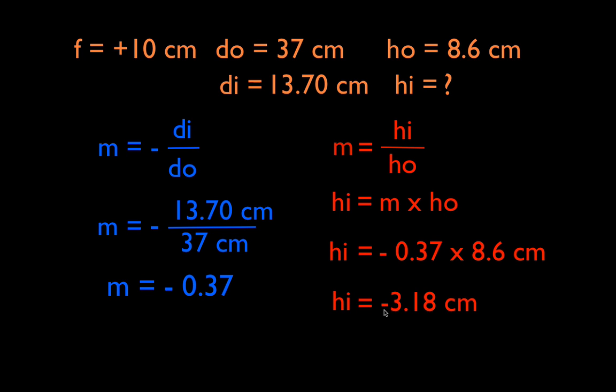Now there really isn't any such a thing as a negative height, but the negative just means that it's inverted from the object. Now the object was right side up, so this means it's going to be upside down so to speak, and the magnitude of the size or the height of the object or the size of the object is 3.18 centimeters. Okay so once again the negative sign just tells us that it's inverted or the orientation is opposite the object. Okay so now we can fill that in.